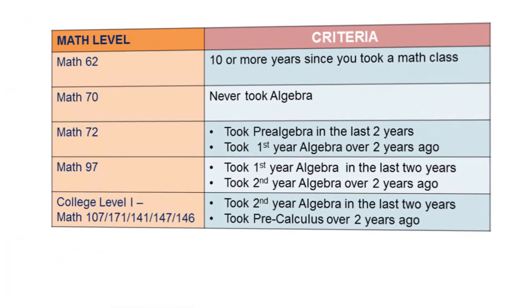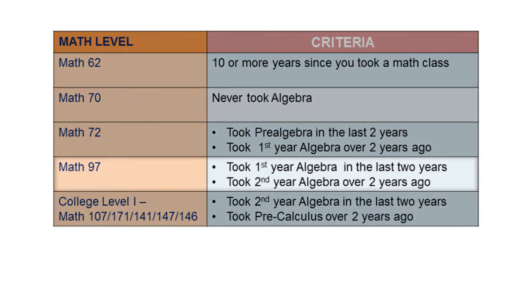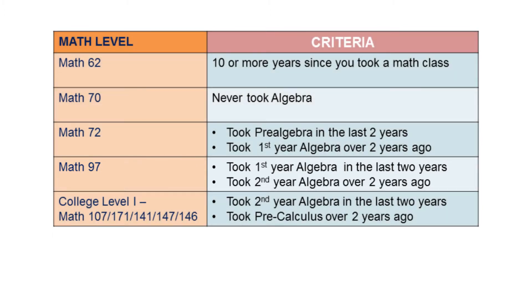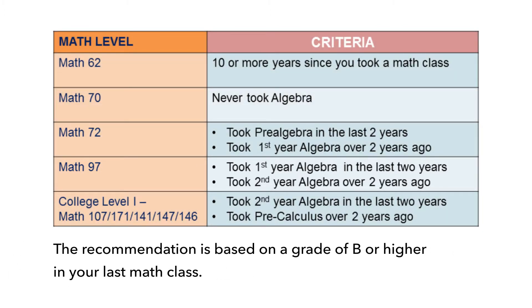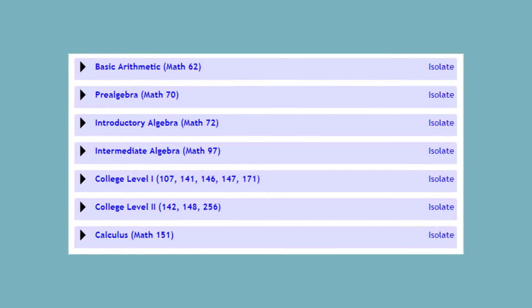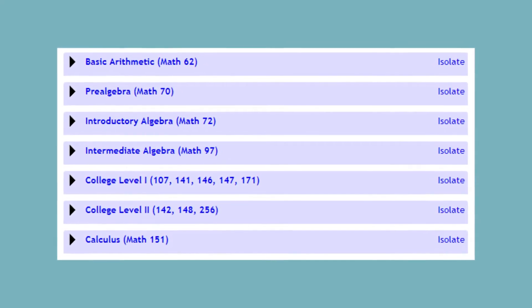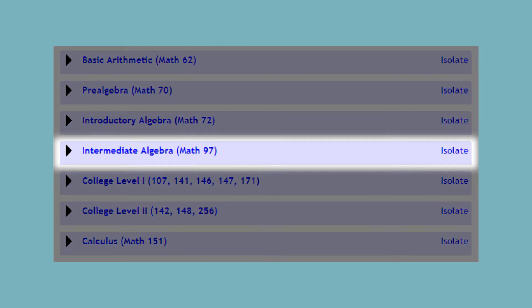Click on GRC Math Placement Review. Now you need to choose a course level to start with. For example, if you look under Math 97, you'll see the criteria is that you took Algebra 1 in the last two years, or you took Algebra 2 over two years ago. This table can help you know where to start. The recommendation is based on a grade of B or higher in your last math class. When you're choosing an entrance exam, be sure you're taking the test for the math class you are attempting to enter. For example, to get into Math 97, you would take the WAMAP entrance exam for Math 97.